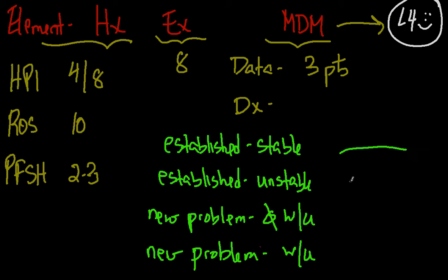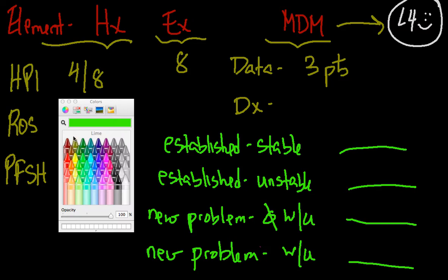Each item gets a certain number of points, and you add up these points to determine your total points for the diagnosis component. There's a minimum number of points you need for the diagnosis component in order to put yourself in position for level four billing.